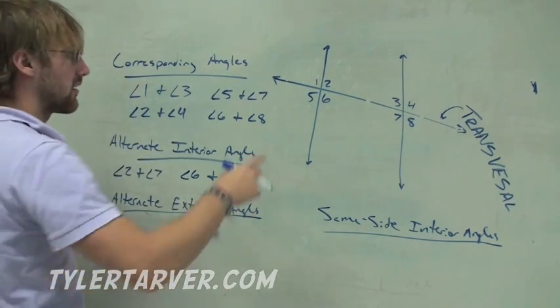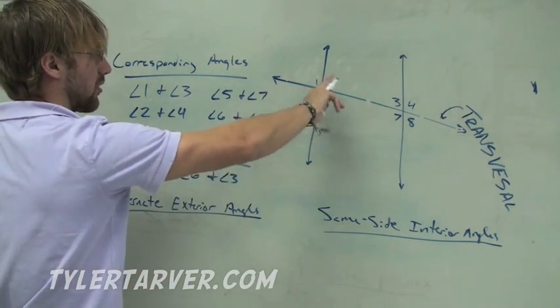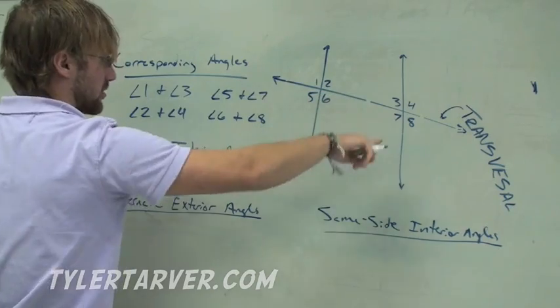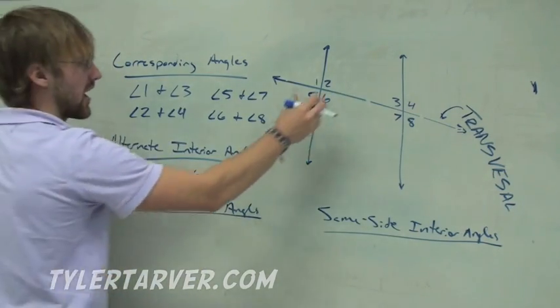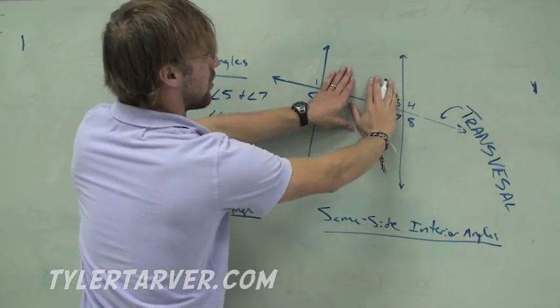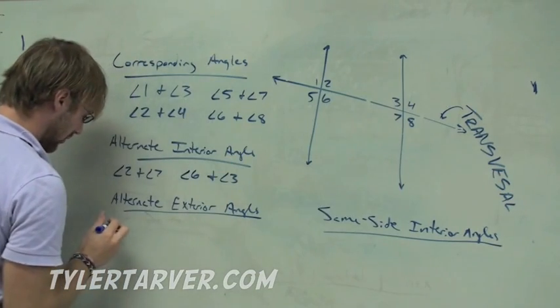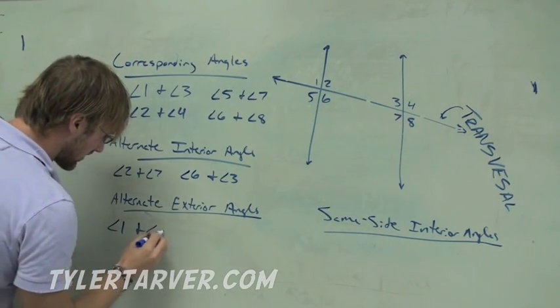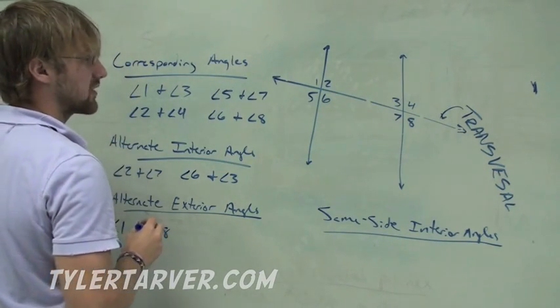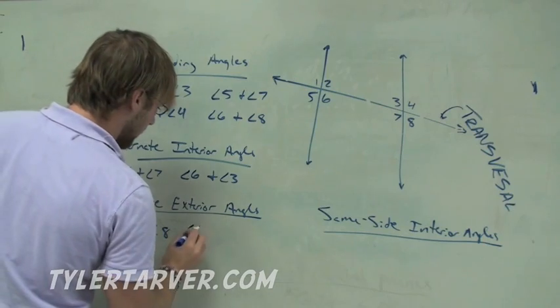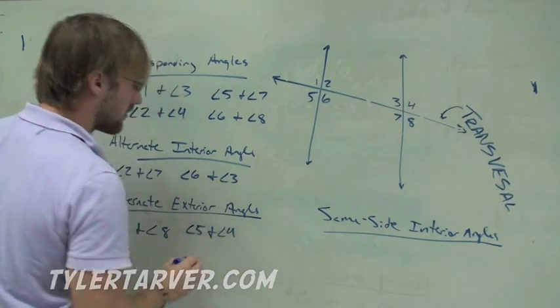Alternate exterior, same thing. First word deals with transversal, so we know they're on opposite sides of this line, the transversal. Exterior means they're outside. So 1 and 8. If you want to figure out the other one on your own, you can do it while I'm writing this down. If you don't have time, press pause because I'm about to shout the answer. It is angle 5 and angle 4.